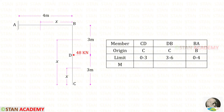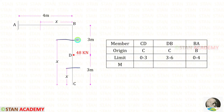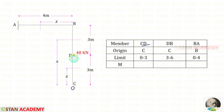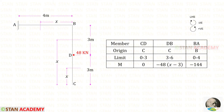Now let us make a table. The members are CED, DB, and BA. For the sections in CED and DB, the origin is C, and for the section in BA the origin is B. For CED the limit is 0 to 3, for DB the limit is 3 to 6, and for BA the limit is 0 to 4. We follow the left-hand side rule: clockwise is negative and anticlockwise is positive. For M in CED, there is no load up to the section, so the moment is 0.